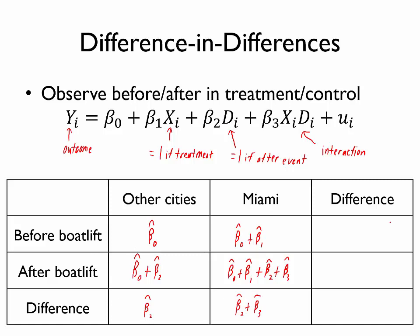Alternatively, I could take differences in the other direction. So I could look before the boat lift and compare Miami versus other cities, or I could do the same thing after the boat lift. And then in this final cell on the bottom, regardless of which way I subtract, I should get this value β̂₃. So you may recall from when we discussed interaction variables that we called this β̂₃ the difference-in-differences. And hopefully this table again illustrates why.